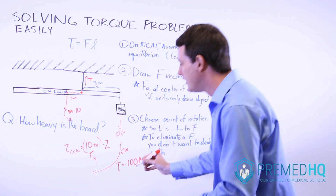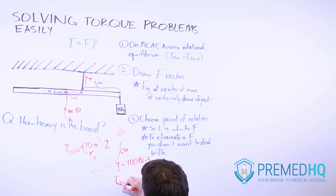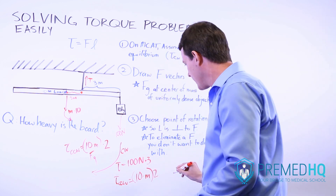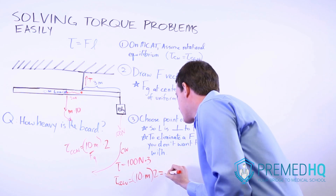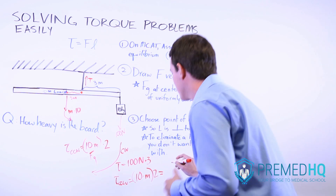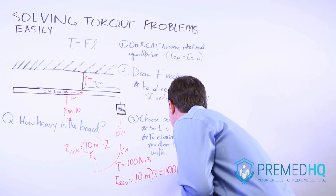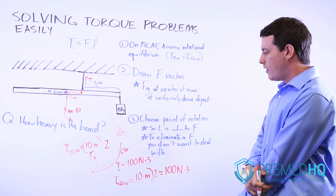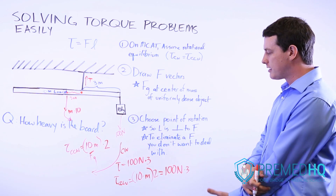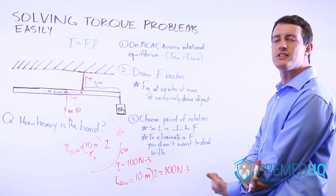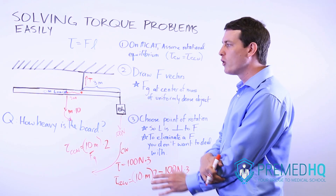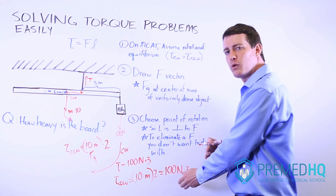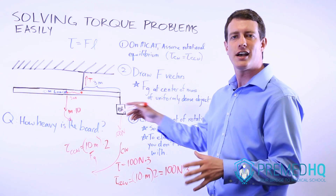Now all we have to do is realize that the counterclockwise torque — 10 times m times the lever arm of two — must equal the clockwise torque of 100 newtons times three. Solving for mass, the mass is equal to 15 kilograms. That tells us the board is 15 kilograms, found by setting the counterclockwise torque equal to the clockwise torque, which required finding that point of rotation.